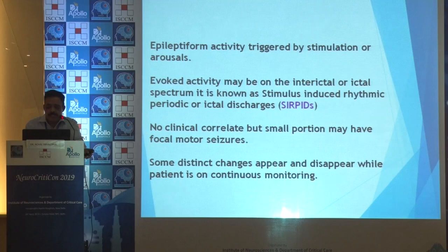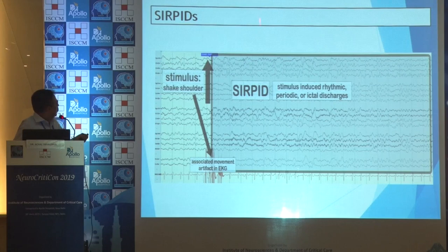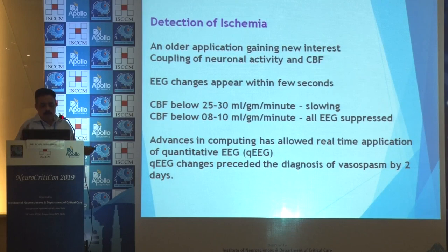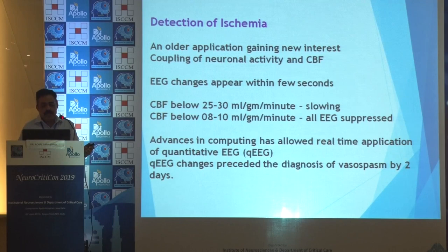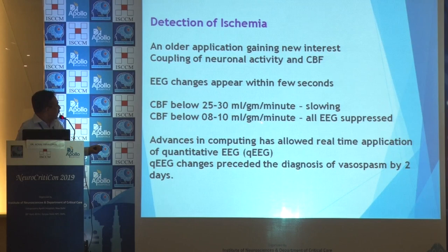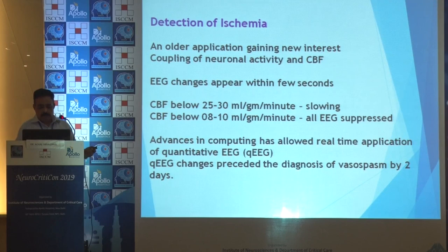Some distinct changes appear and disappear during continuous EEG monitoring. You can see the pattern visible with periodic or ictal discharges, and the stimulus is marked. In the EEG you can see movement artifacts as well. Another application, though old, has gained new interest: coupling neuronal activity with cerebral blood flow. When blood flow is between 8 to 10 ml per gram per minute, all EEG is suppressed, and at 25 to 30 ml per gram per minute, there is flowing background.